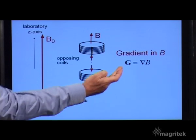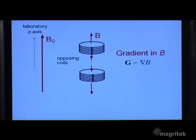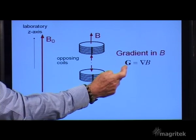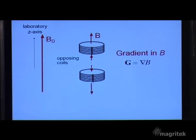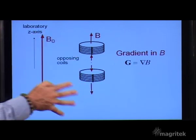That means that our gradient can be represented as a vector, depending upon the direction of the gradient applied by each individual coil. So we write this gradient vector as the gradient of the additional magnetic field that's applied by our set of coils.